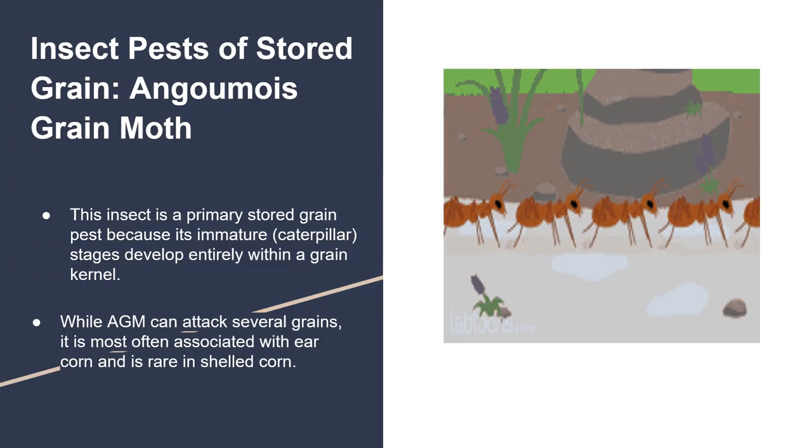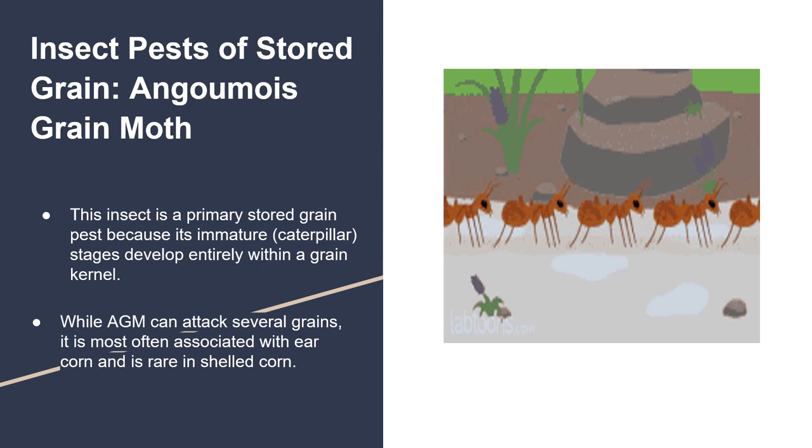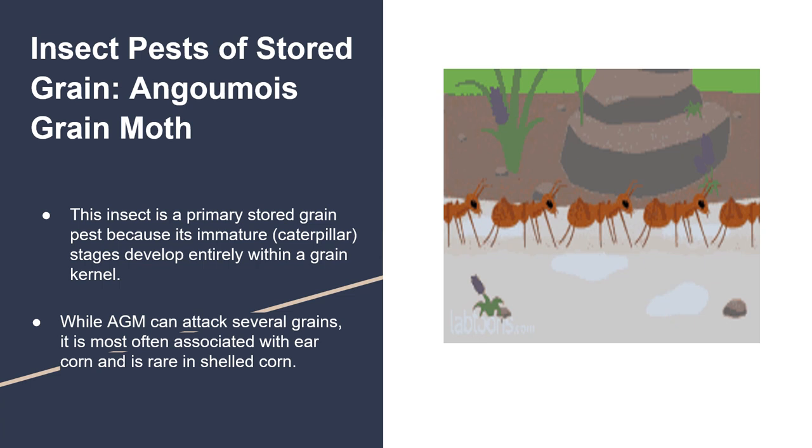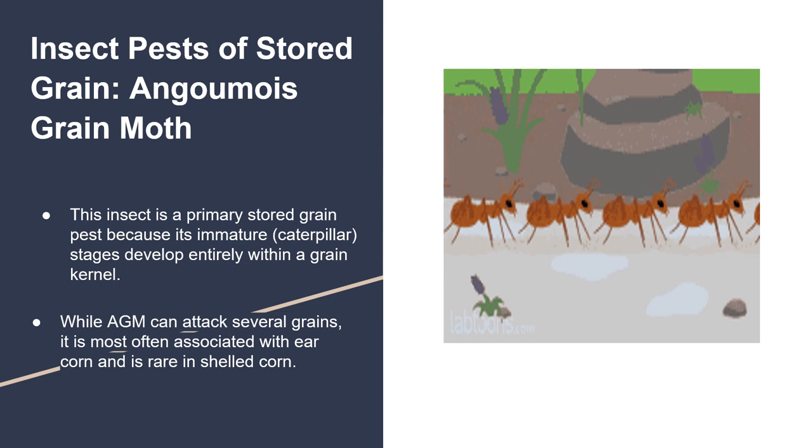Insect Pests of Stored Grains: Angoumois Grain Moth. This insect is a primary stored grain pest because its immature caterpillar stages develop entirely within a grain kernel. While AGM can attack several grains, it is most often associated with ear corn and is rare in shelled corn.